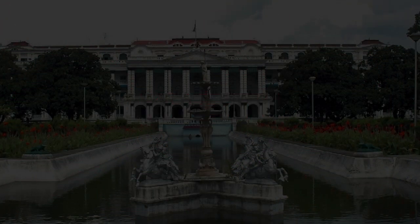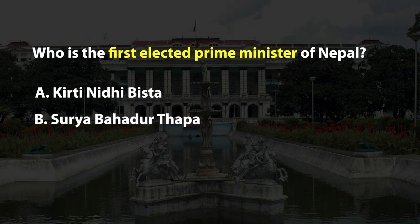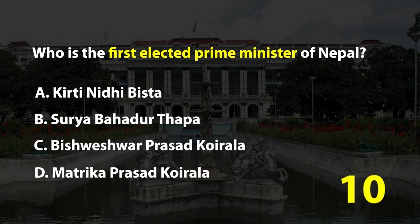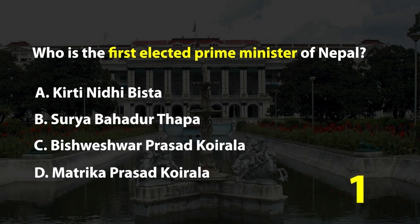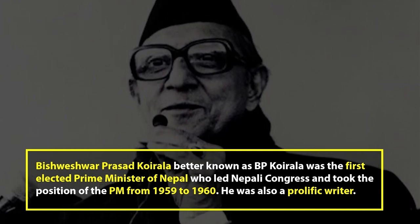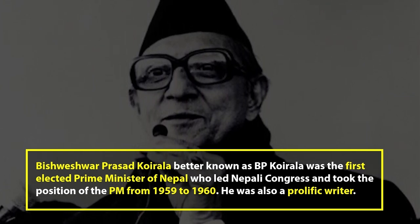Question number 6. Who is the first elected Prime Minister of Nepal? A. Kirti Nidhi Bista, B. Surya Bahadur Thapa, C. Biswesur Prasad Koirala, or D. Matrika Prasad Koirala. The right answer is C. Bishwesur Prasad Koirala, better known as B.P. Koirala, was the first elected Prime Minister of Nepal, who led Nepali Congress and held the position from 1959 to 1960. He was also a prolific writer.